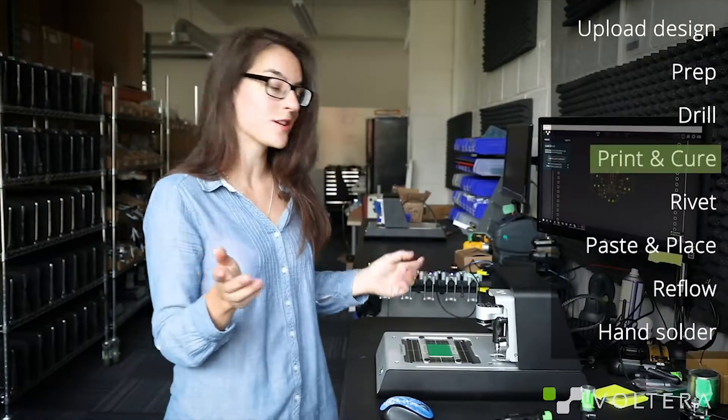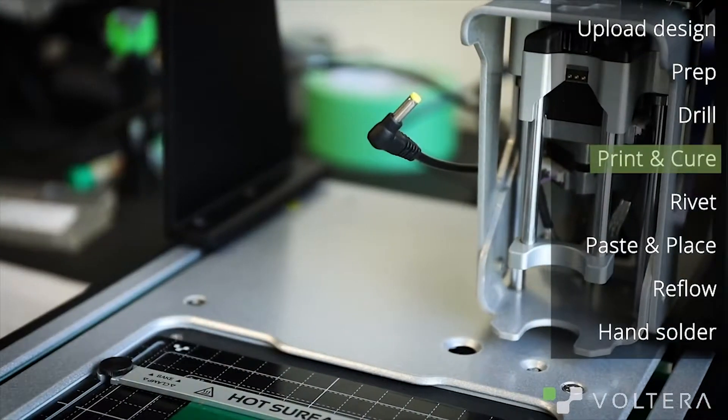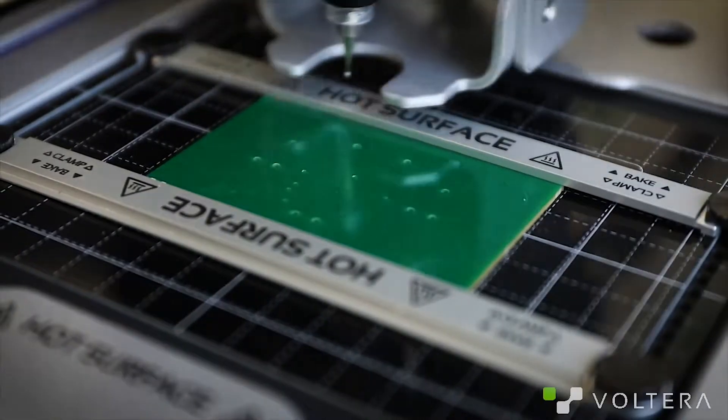Alright, let's print some traces. Swap out the drill head for the ink dispenser, let it calibrate, and begin laying down conductive ink.